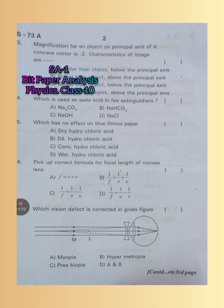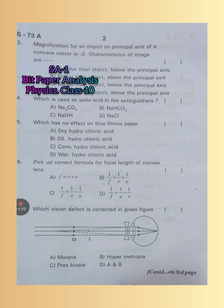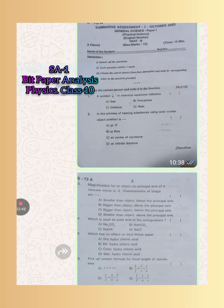Next one: Vision defect is corrected in given figure. So myopia is the right answer here. The lens used is double concave lens, so double concave lens is used to correct the defect of myopia. So A is the right answer.